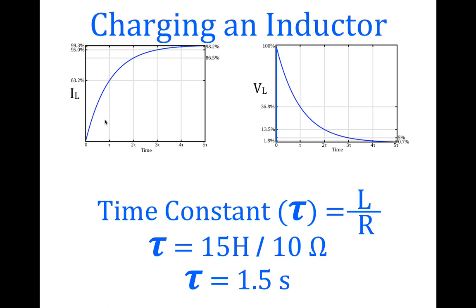After one time constant, the current will reach 63.2% of the eventual maximum. After two time constants, 86.5%; three time constants, 95%; four time constants, 98.2%; and after five time constants, we consider the current to be at its maximum at 99.3%. For voltage, after one time constant it will be 36.8% of the original maximum, and by five time constants it will be 0.7% of the original maximum voltage.